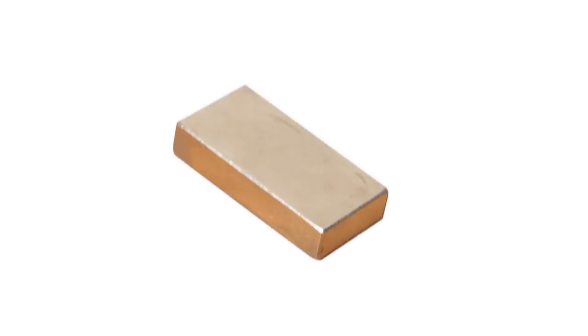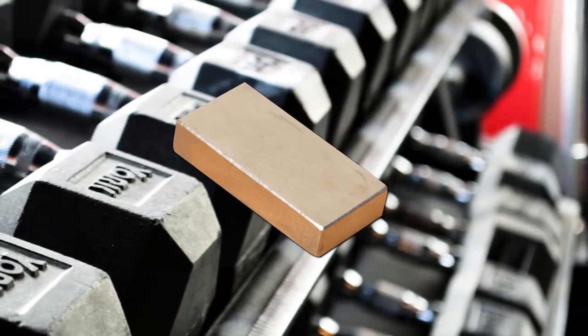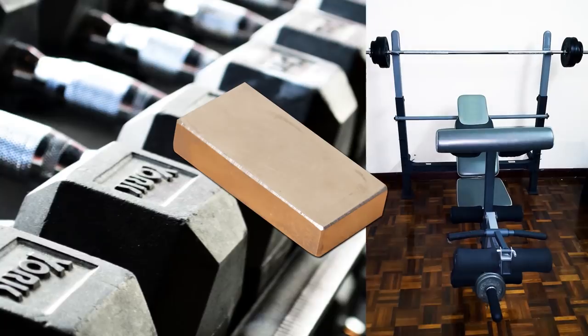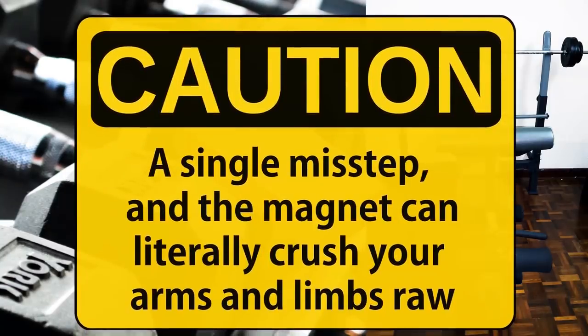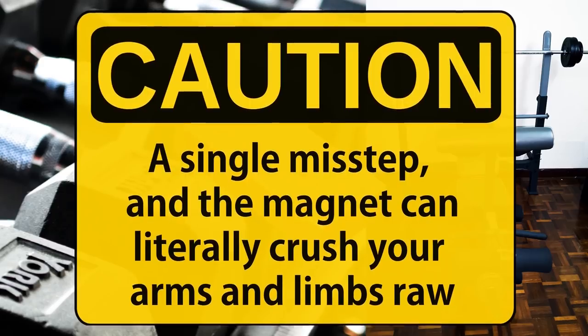This means that a relatively large neodymium block can probably carry your entire lifting weights rack, probably even including the bench seat. Though do be careful, a single misstep and the magnet can literally crush your arms and limbs raw.